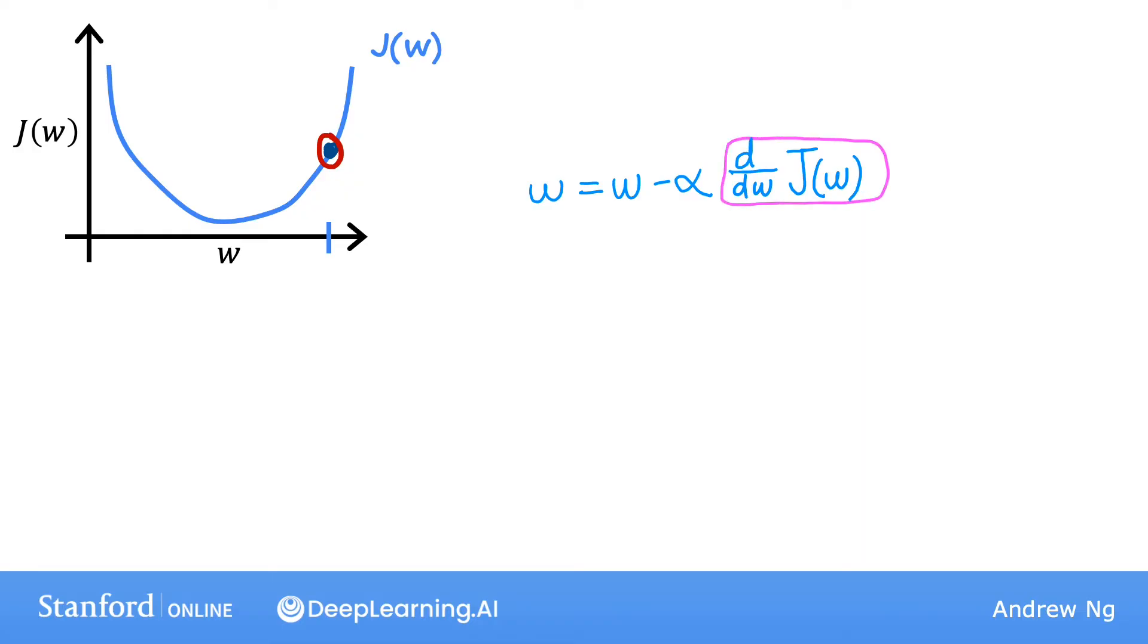Let's look at what this derivative term means. A way to think about the derivative at this point on the line is to draw a tangent line, which is a straight line that touches this curve at that point. In math, the slope of this line is the derivative of the function J at this point. To get the slope, you can draw a little triangle like this. If you compute the height divided by the width of this triangle, that is the slope.